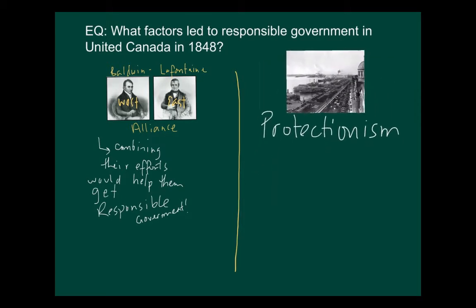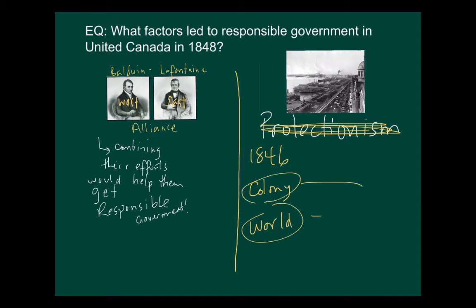Protectionist policy was abandoned in 1846. The British government decided to abandon it, and suddenly the colony was going to have to compete with the rest of the world for the British marketplace. Now you had the colony and the rest of the world both fighting for the British marketplace, which was bad for the colony because it meant it would have to compete with everybody else to ensure it made money. Merchants living in the colony reacted very strongly to the loss of Great Britain's protectionist policy, which had obviously been a huge advantage to them.